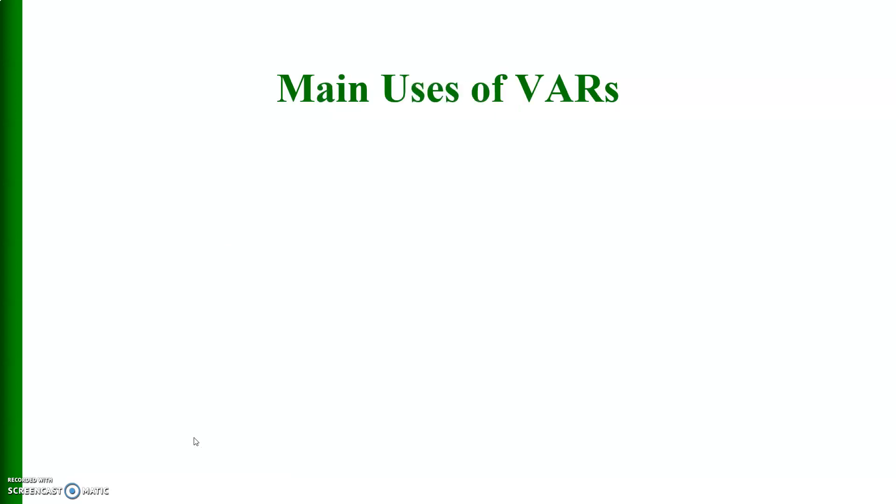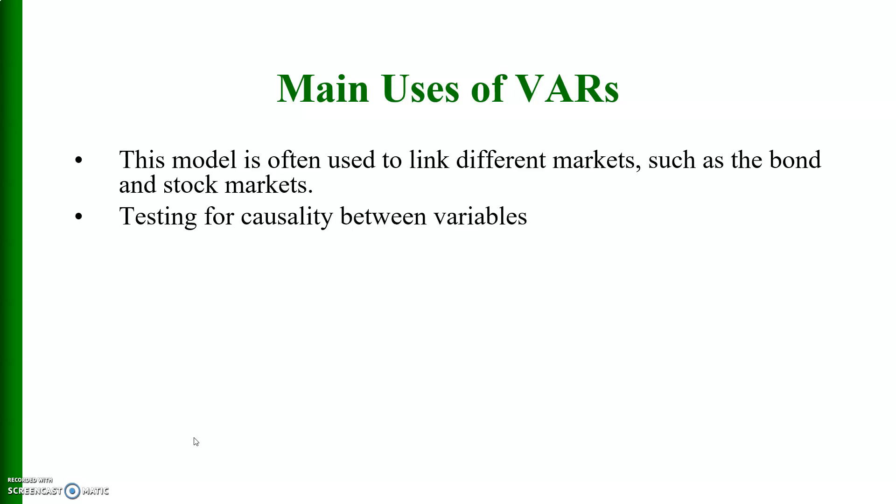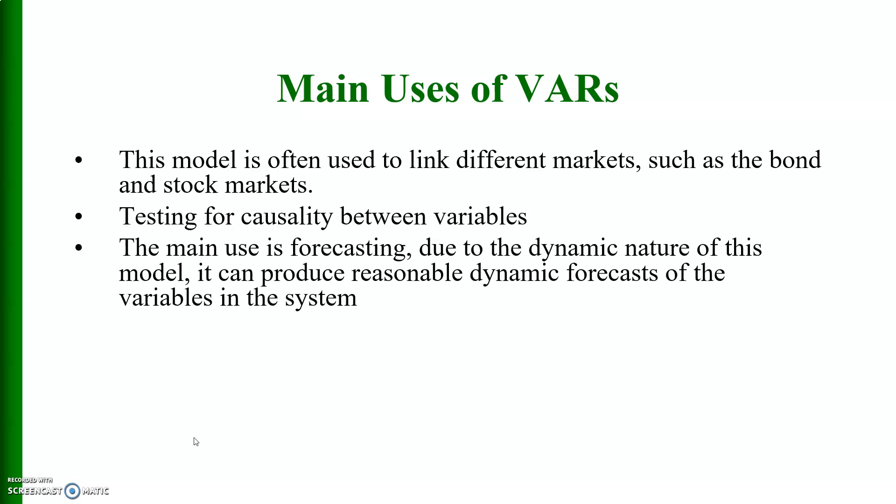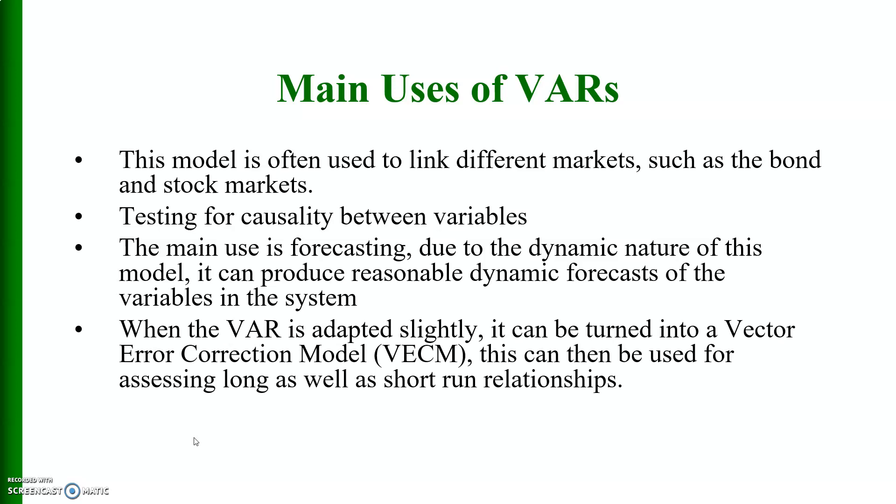What are the main uses of VAR system? This model is often used to link different markets such as the bond and stock markets. We can test for causality between variables and the main use is forecasting due to the dynamic nature of this model. It can produce reasonable dynamic forecasts of the variables in the system. When the VAR is adapted slightly, it can be turned into a vector error correction model also, and this can be used for assessing long as well as short run relationships.